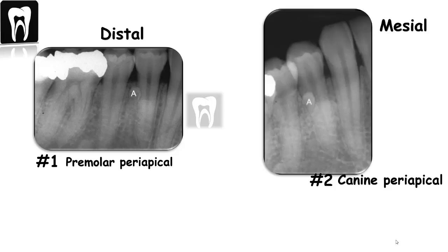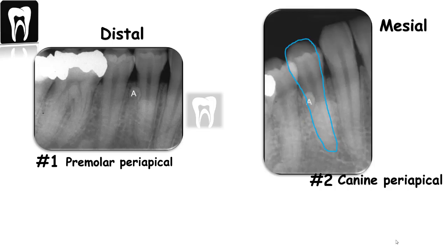Step number four: determine where the image of the unknown object — the supernumerary tooth — moves in relation to the fixed object, that is the mandibular first premolar, from image number one to image number two. The supernumerary tooth moves more mesial or anterior than the mandibular first premolar from image number one to image number two.